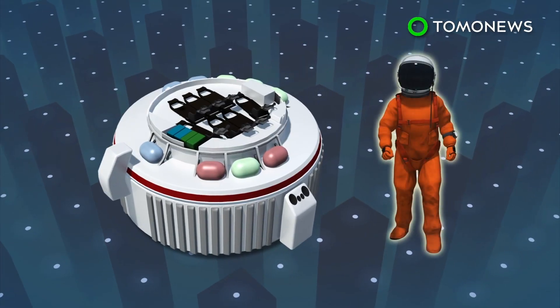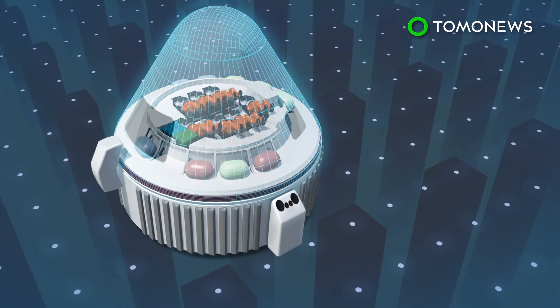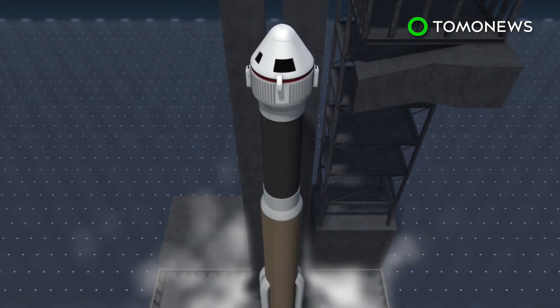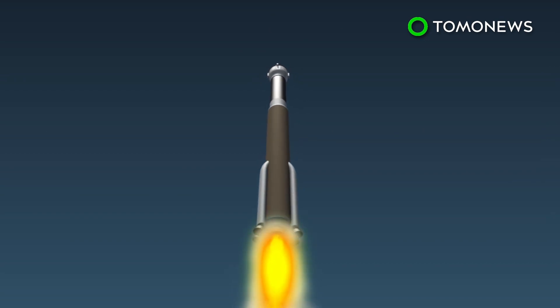Boeing is working on the CST-100 Starliner. The spacecraft can seat up to seven and is meant to send astronauts to the space station. Three Starliners are currently in production, with one set to carry astronauts next year. The pressurized vessel can be reused 10 times.